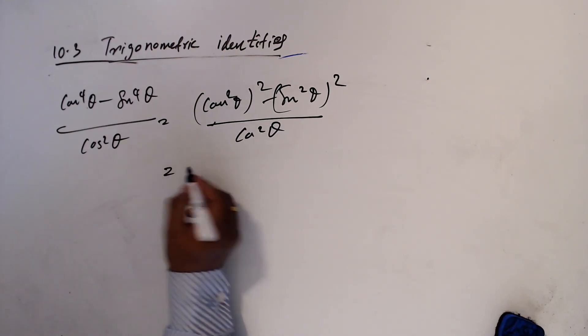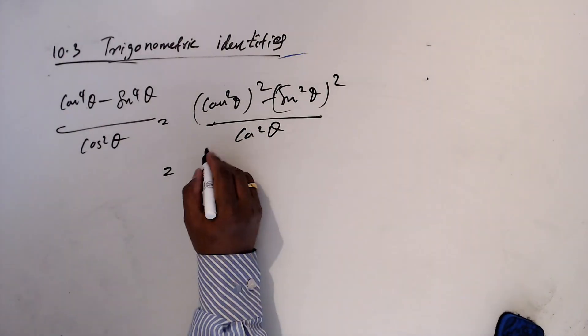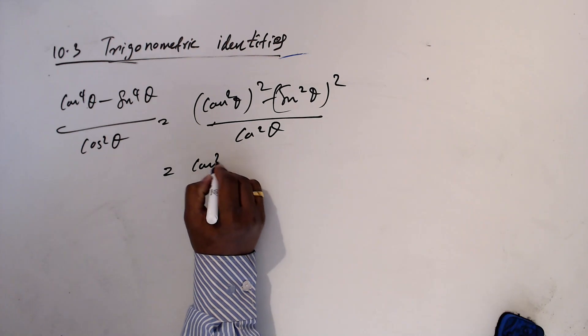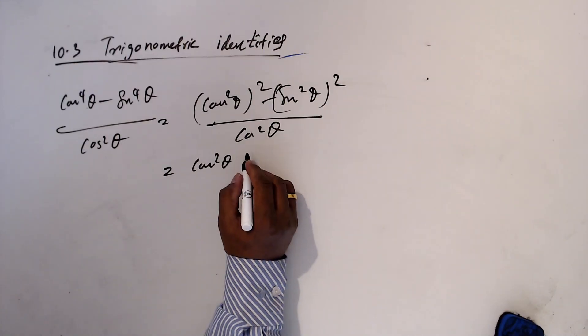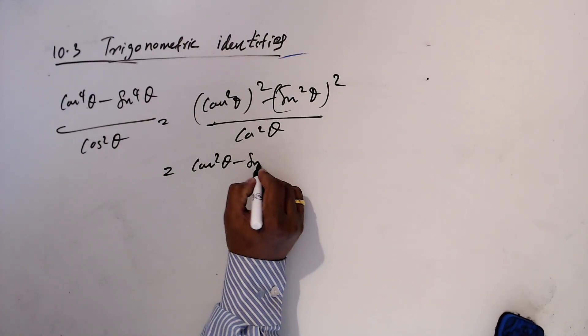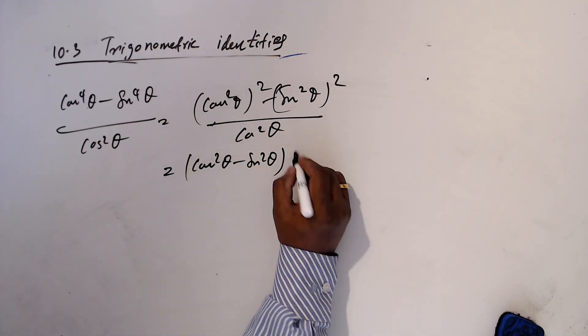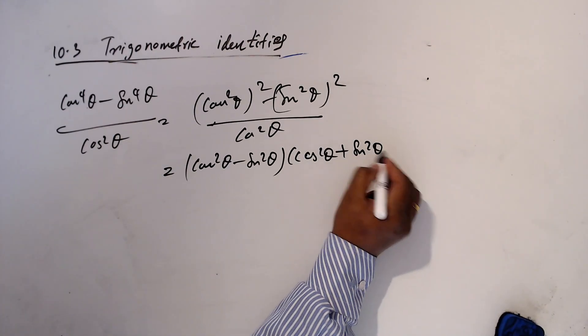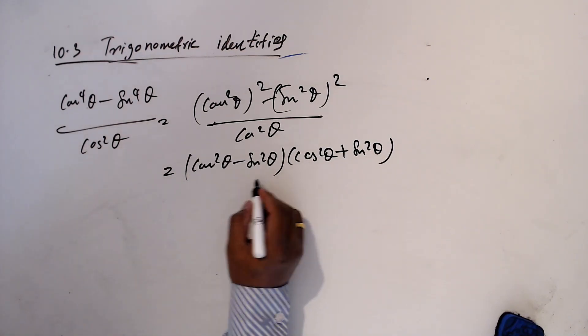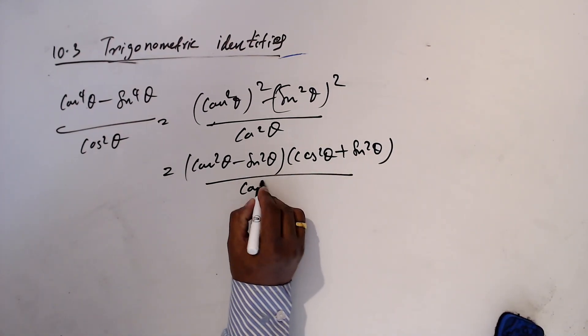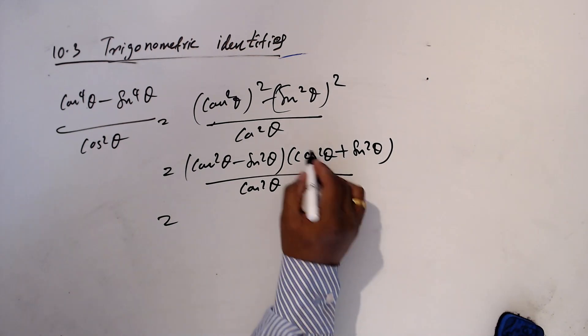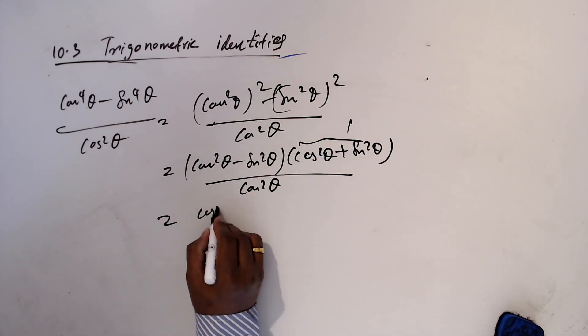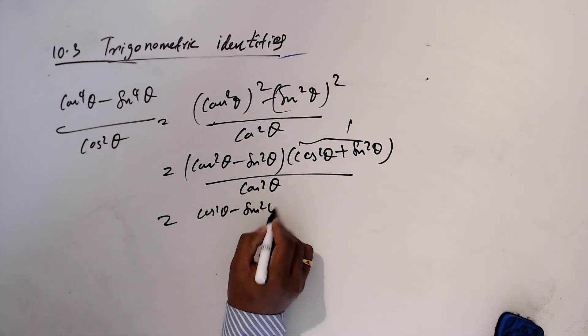We'll continue from here again. Cos square theta minus sine square theta over cos square theta. So this answer is going to be one, cos square theta minus sine square theta over cos square theta.